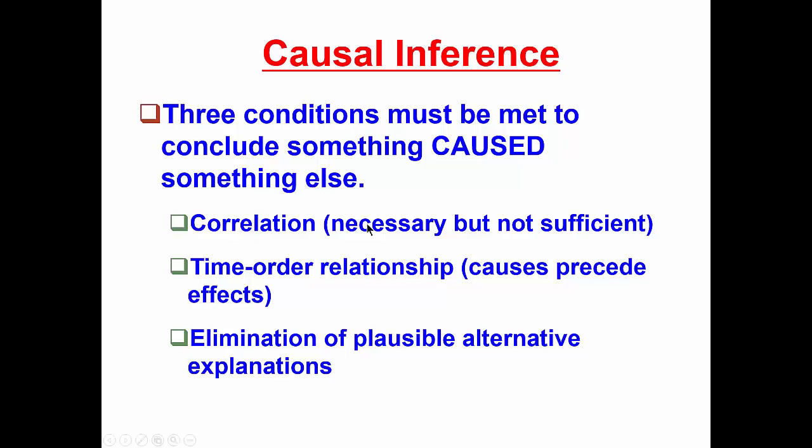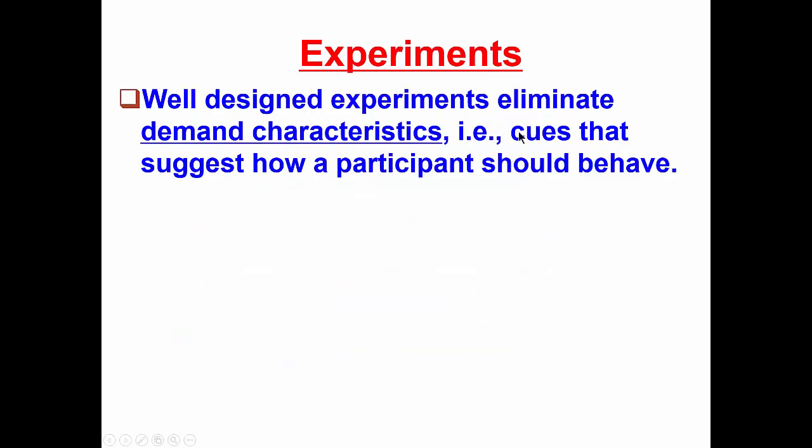So, to sum up, we have correlation, time-order relationship, and the elimination of plausible alternatives as three criteria that are typically deemed necessary for drawing a causal inference. A well-designed experiment can eliminate a so-called demand characteristic, and this is an important topic within psychology. Demand characteristics are cues that suggest how a participant should behave.